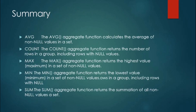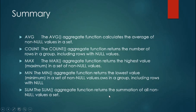Here is a summary of what we studied today. AVERAGE calculates the average. COUNT returns the number of rows in a group. MAX returns the highest value from a particular column. MIN returns the minimum value from a particular column. SUM returns the sum of all non-null values from the table.